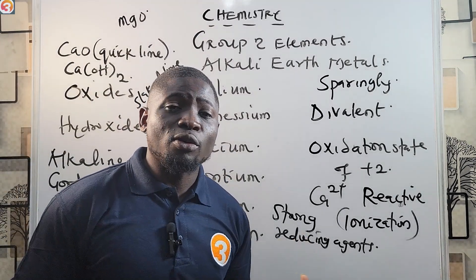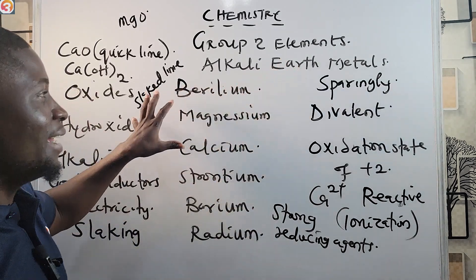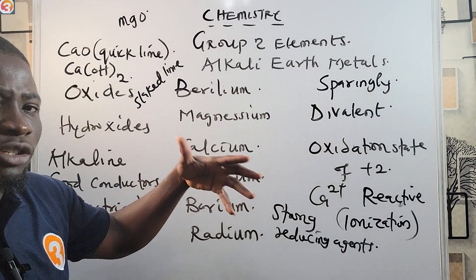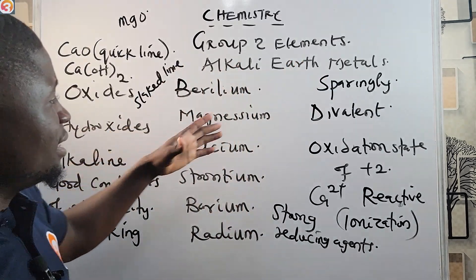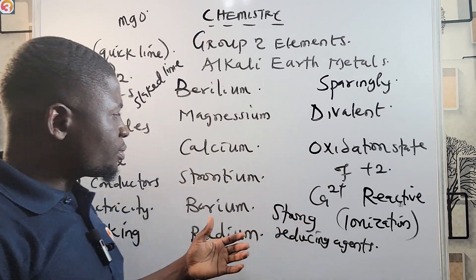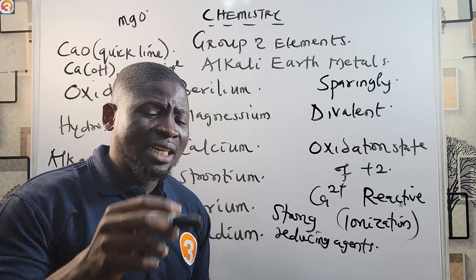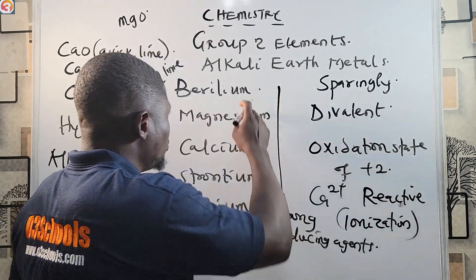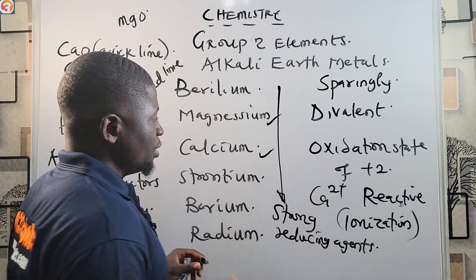To summarize group two elements: they are called Alkaline Earth Metals because they form oxides and hydroxides that are alkaline in nature and are found in the Earth's crust. They are divalent with a valency of two, they are reactive and strong reducing agents, and their reducing property increases as we go down the group. The two most important elements in group two are Magnesium and Calcium.